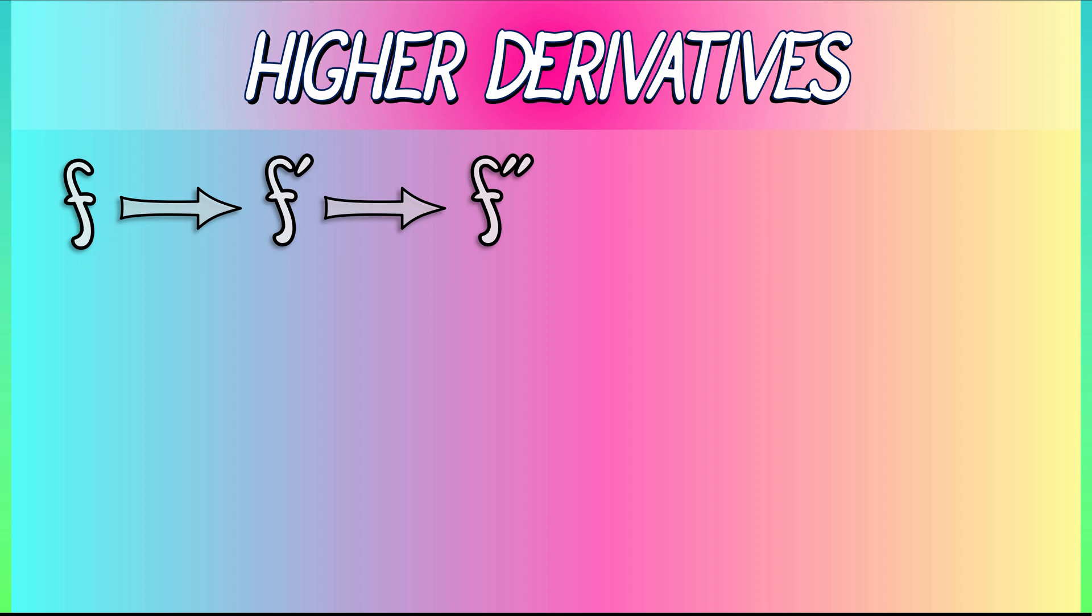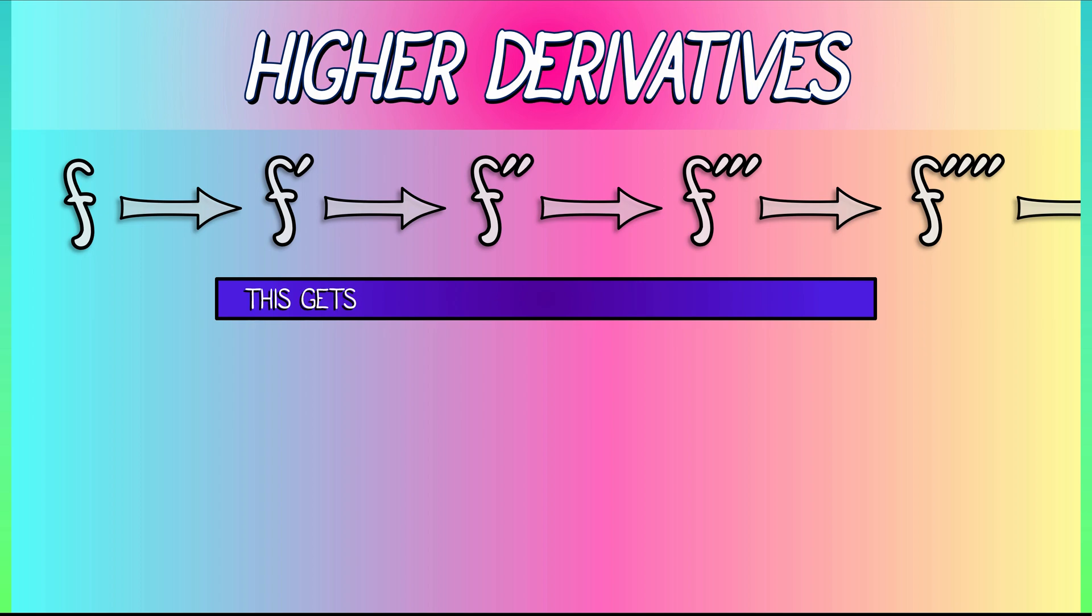If we need to move to the third derivative, I suppose we could call that f triple prime, and then the fourth derivative, f quad prime, and then we keep going. This gets a little ridiculous. It's best to avoid this prime notation unless it's really a very low-order derivative.